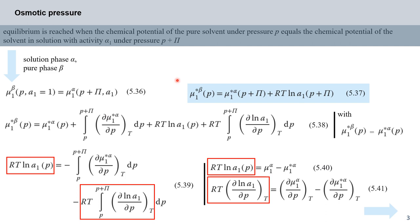We must remember that the activity is pressure dependent, just like the chemical potential. So to relate these quantities to pressure in the solution phase, we restate equation 537 as equation 538: mu₁*^beta at pressure p equals mu₁*^alpha at pressure p plus the integral of the pressure-dependent chemical potential between the limits p and p plus large pi — that is, the partial derivative of mu₁*^alpha with respect to p at constant temperature, integrated over dp.